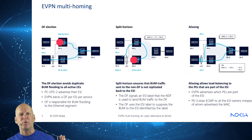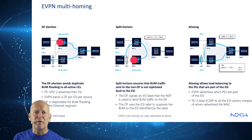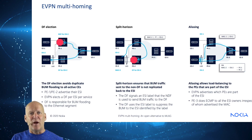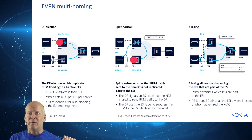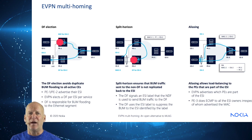In all active scenarios, there are required procedures for loop avoidance. Designated forwarders are responsible for this, and it can be compared in function to the concept of a root bridge in spanning tree. The DF election helps us avoid duplicate BUM flooding in all active CE scenarios, because the DF is responsible for BUM flooding into the Ethernet segment. Split horizon ensures that broadcast traffic sent to the non-DF is not replicated back onto the Ethernet segment. Aliasing allows load balancing to the PEs that are part of the ESI, providing per-service load balancing in single active and all active scenarios.